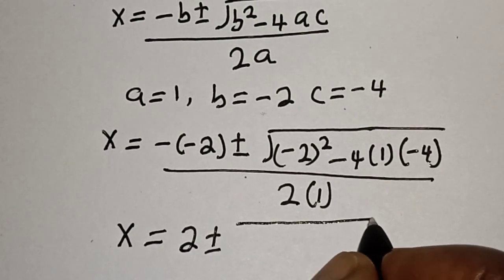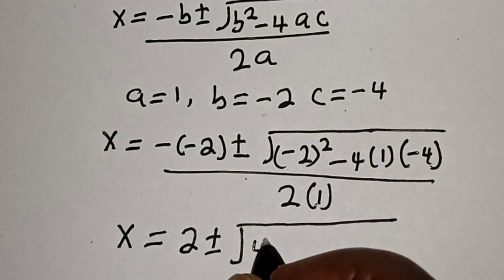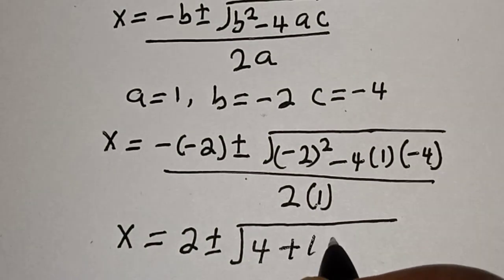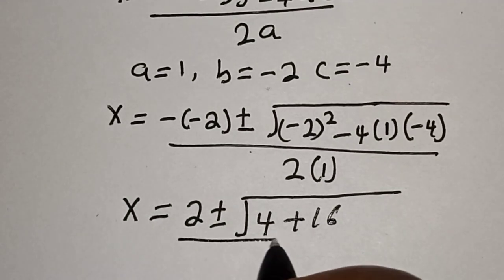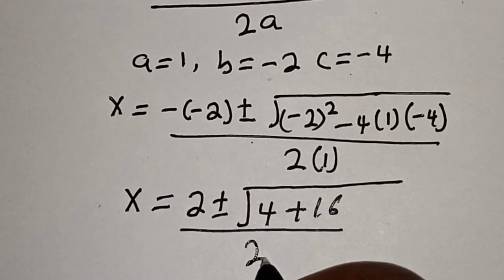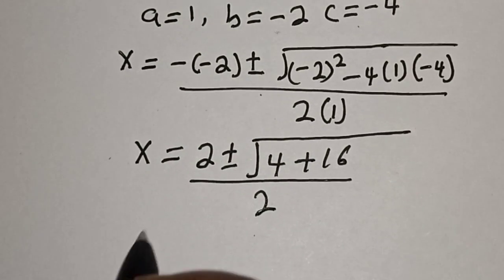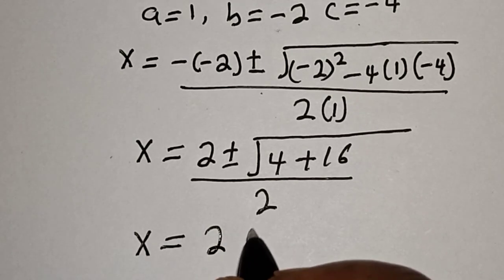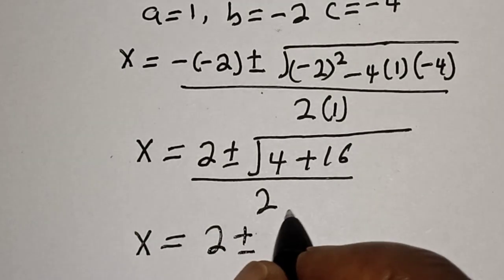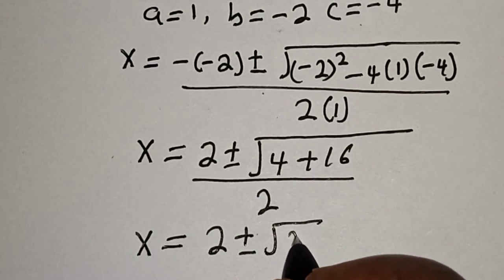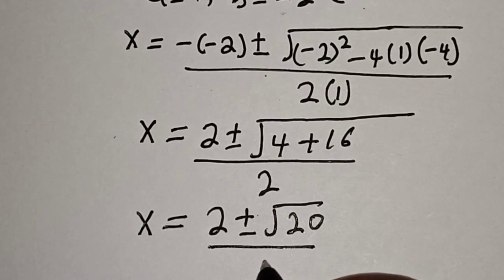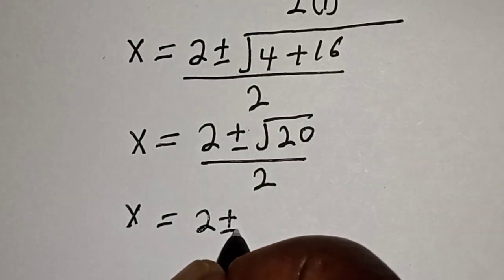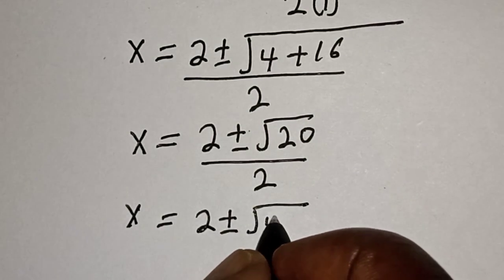Minus 2 squared is 4, then minus 4 times 1 times minus 4 is plus 16, divided by 2. So we have x equal to 2 plus or minus square root of 20, divided by 2.